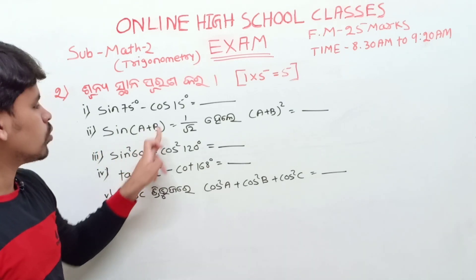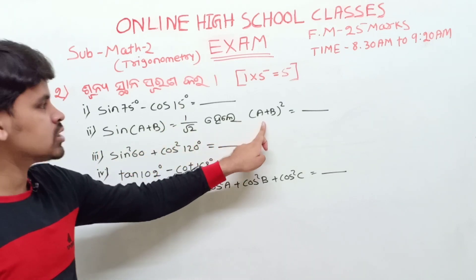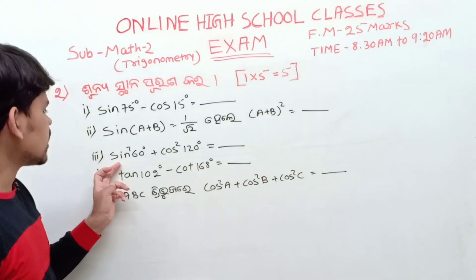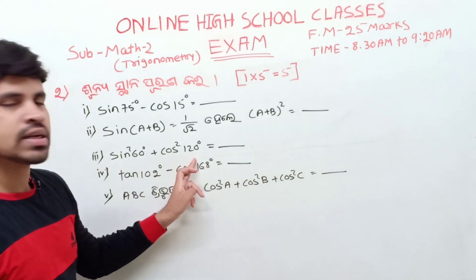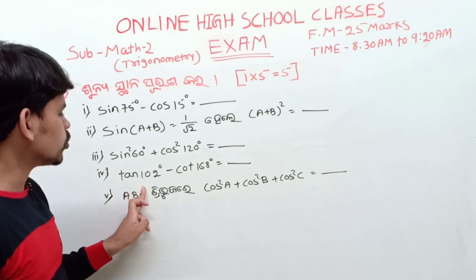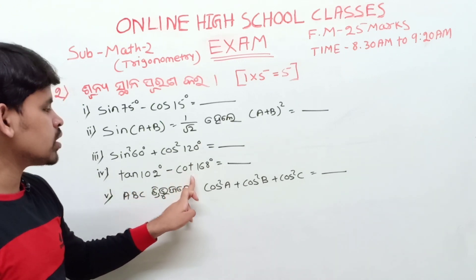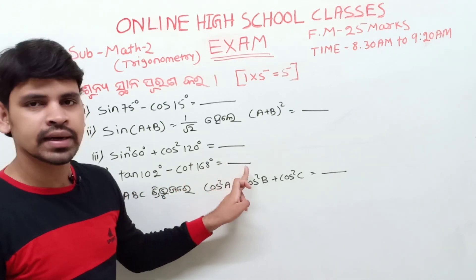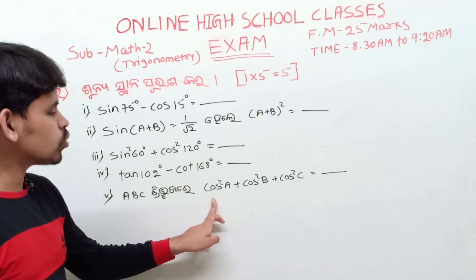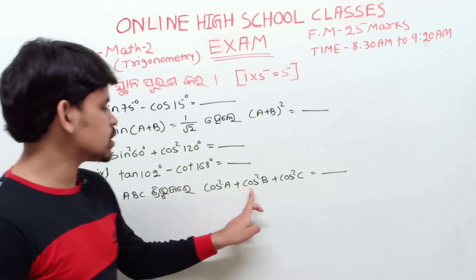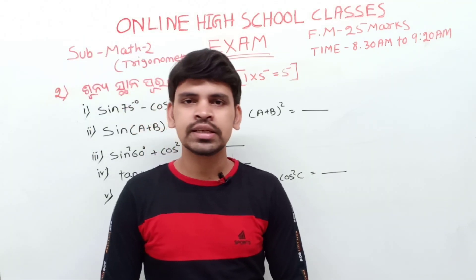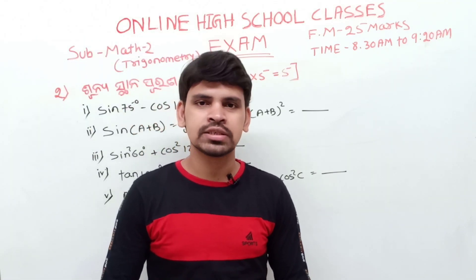Next: sin(A+B) equal to 1 by root 2, find (A+B) whole square equal to dash. Next: cos squared 60 degree plus cos squared 120 degree equals dash. Next: tan 102 degree minus cot 168 degree equals dash. Finally: if A plus B plus C equals zero, then cos squared A plus cos squared B plus cos squared C equals dash. All the best.